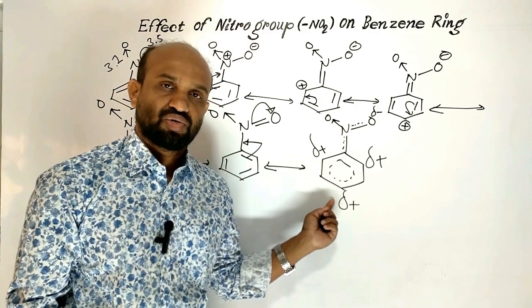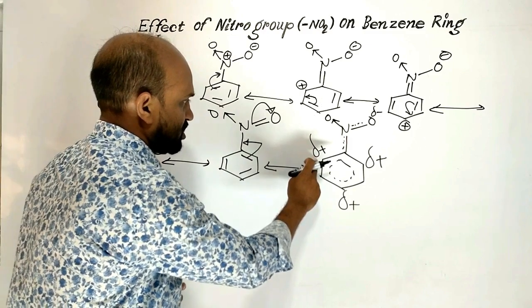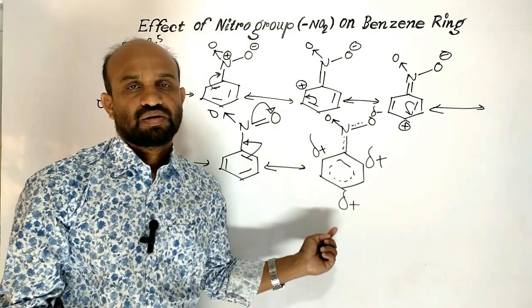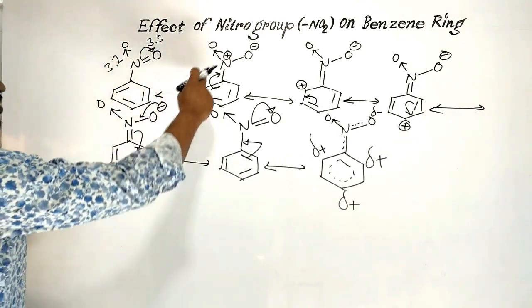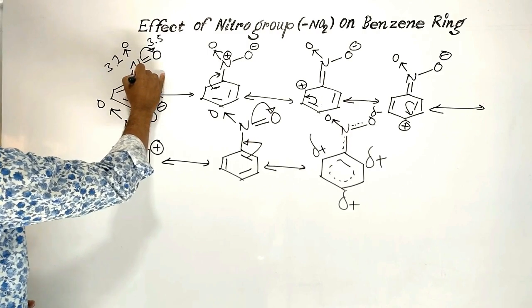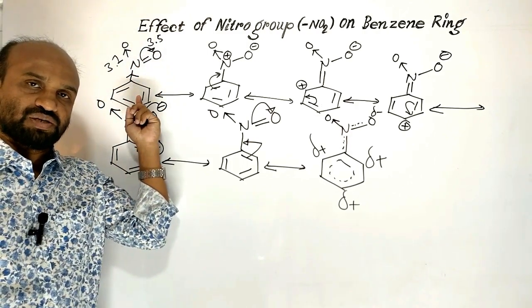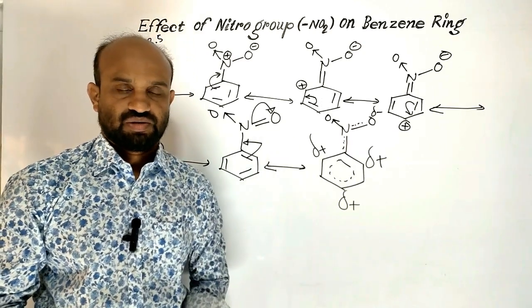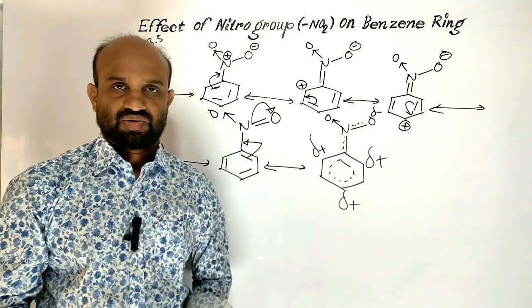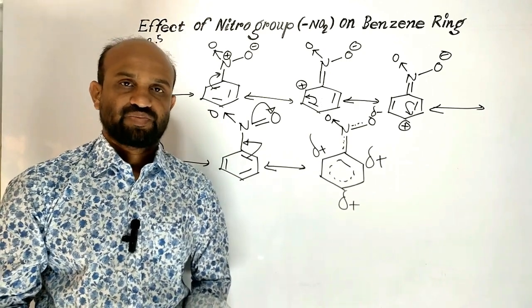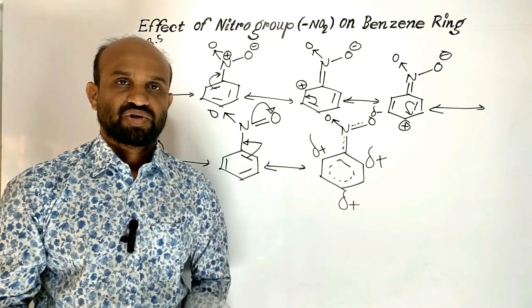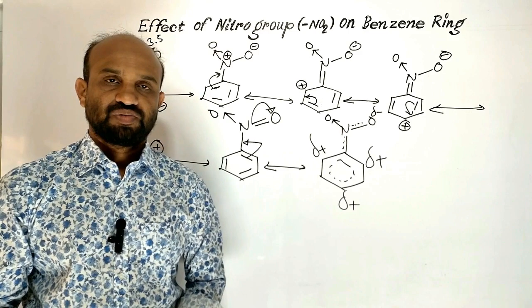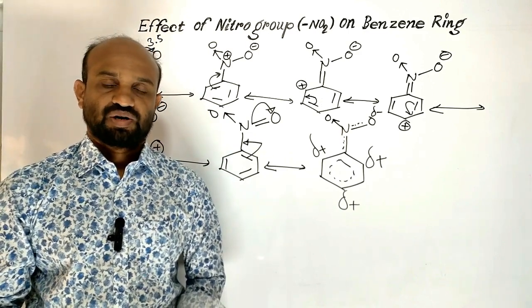The nitro group creates a partially positive charge over ortho carbons and over para carbon, as the nitro group withdraws electrons from the benzene ring because of the presence of the oxygen. Nitro group acts as an electron withdrawing group from the benzene ring, and as a result, ortho and para carbons get partially positive in charge because of the electron withdrawing capacity of nitro group.